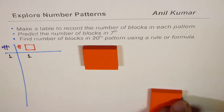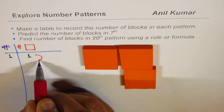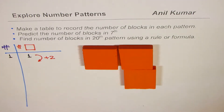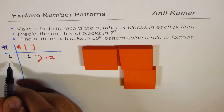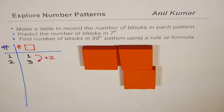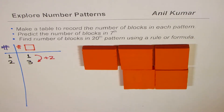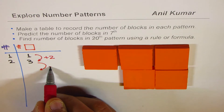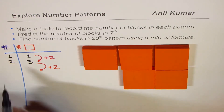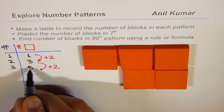So what we will do is make a few patterns. This is my second pattern. What I did here is that I added two, so in moving from first to the second, I added two. It resulted in the second pattern where I have three blocks. Now let me add two more — I get the third pattern. So I'm adding two more, and in the third pattern I get five blocks.